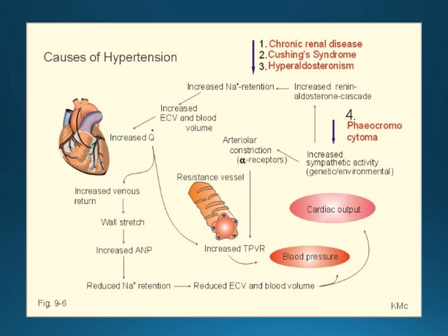This slide shows examples of secondary hypertension: chronic renal disease, Cushing syndrome, hyperaldosteronism, and pheochromocytoma tumor. Malignant hypertension can be caused by this type of tumor on the adrenal gland. The tumor secretes elevated levels of catecholamines, which include epinephrine and norepinephrine, causing hypertension. The treatment for this is to remove the tumor.